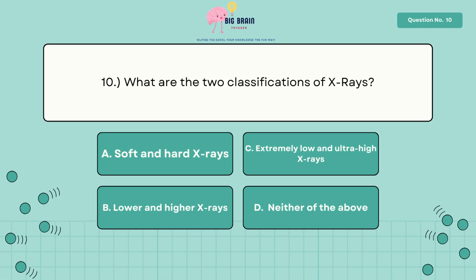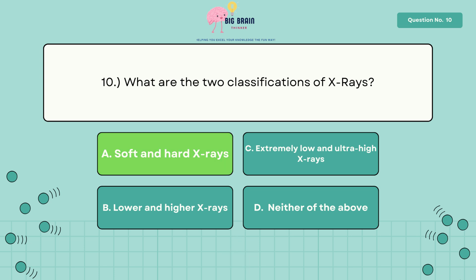Ten, what are the two classifications of X-rays? The answer is letter A, soft and hard X-rays.